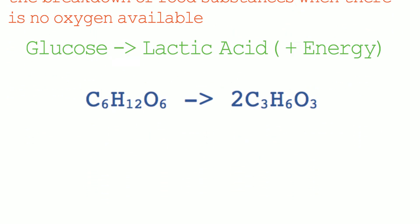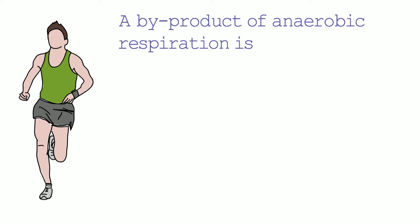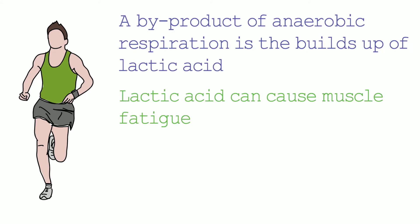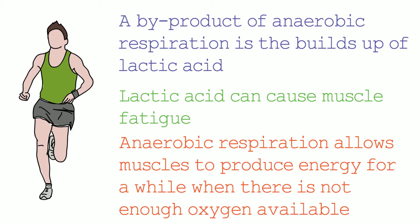During vigorous exercise, your body cannot supply enough oxygen to your muscles, which results in the cells switching from aerobic respiration to anaerobic respiration. Anaerobic respiration is not the most efficient way of converting glucose into energy, and a byproduct is the buildup of lactic acid. Lactic acid also causes muscle fatigue, which is where the muscles get tired and stop contracting efficiently. However, anaerobic respiration allows muscles to produce energy for a while when there is no oxygen available.